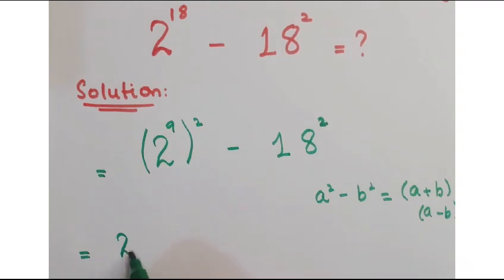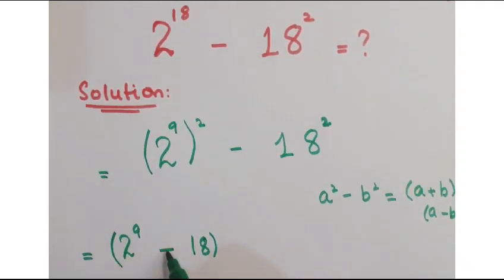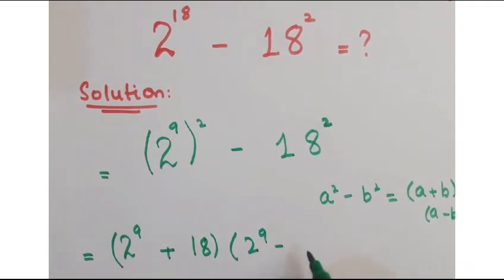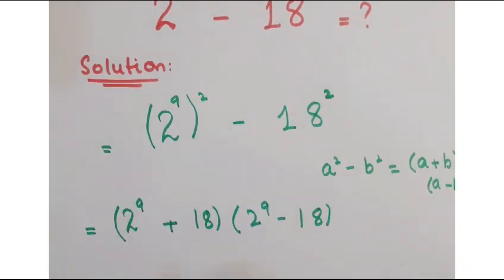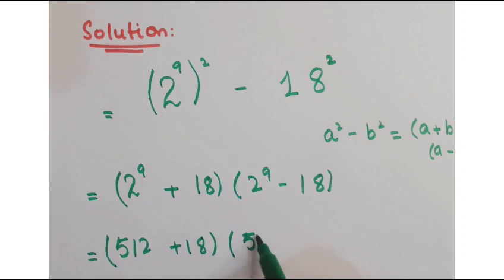So you can write this as 2 to the power 9 plus 18 times 2 to the power 9 minus 18. Now 2 to the power 9 has a value 512, so it's 512 plus 18 into 512 minus 18.